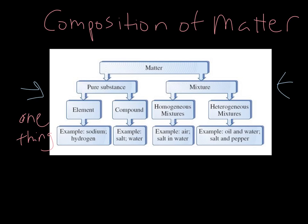We can break down that substance into either an element or a compound. An element is just that single one element. They give the examples of sodium or hydrogen. Any element on the periodic table would count. A compound is made up of more than one type of element.